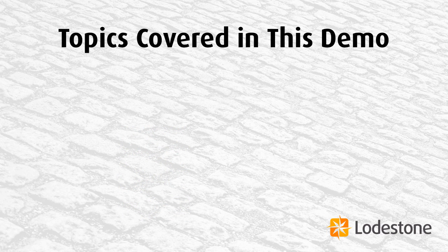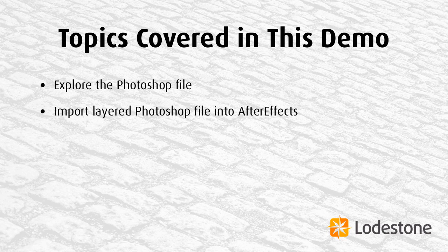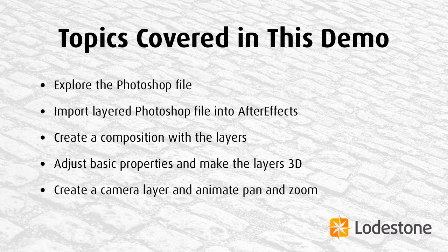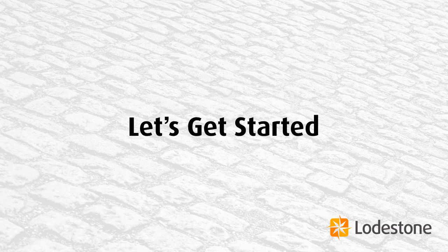The topics we're going to cover in this demonstration include: we'll start off in Photoshop and explore the layered Photoshop file. Then we'll import that layered Photoshop file into After Effects, create a composition using those layers, and take a look at the basic properties of layers in After Effects, then make those layers into three-dimensional layers. Next, we'll add a camera layer and use it to create the pan and zoom. Finally, we'll export our finished file out as a QuickTime movie, an F4V, a flash video, whatever your choice is.